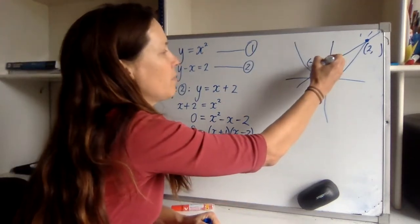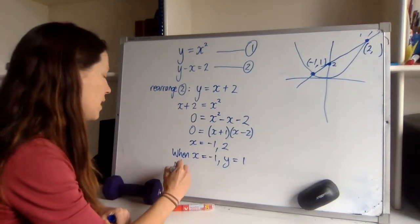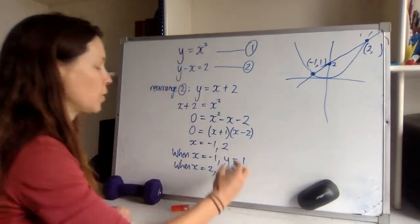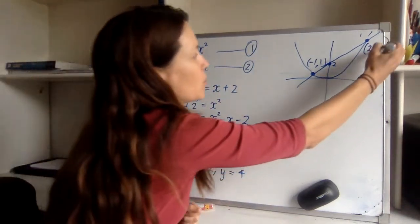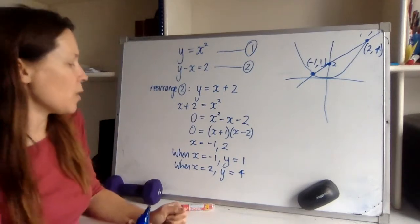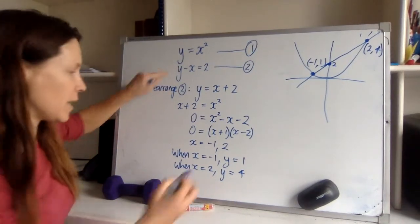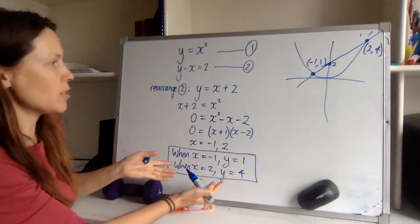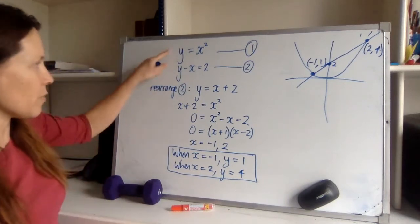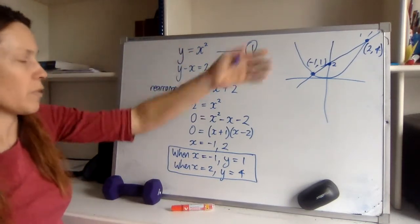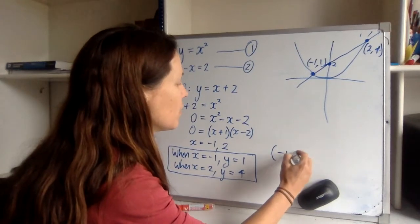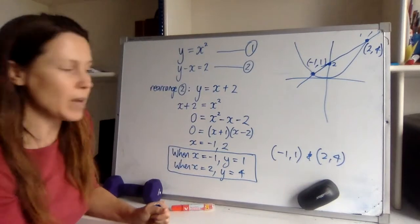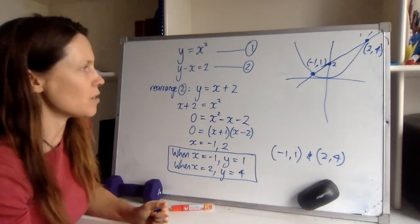And when x equals two, y equals two squared, which is four. So over here I've got my points. So if you are asked just to solve these equations simultaneously, this would be your answer. And I'd put a box around it to make it really clear that I'm finished. If you are asked to find the points of intersection of these two functions, then I'd give my answer as two coordinate pairs, because that's showing your understanding of these answers as pairs that can be graphed on a Cartesian plane.